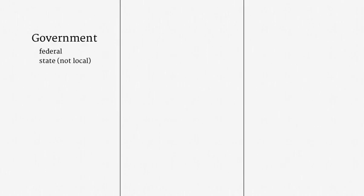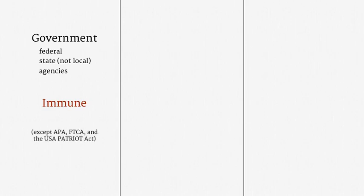The first category is the government. That includes the federal government, the state government — but not local governments — and all of the federal and state agencies. The entities in this category are immune from suit as sovereigns. A plaintiff can't get anything unless that immunity has been waived or abrogated. For our purposes, there are three exceptions to note. The United States has expressly waived sovereign immunity under the Administrative Procedure Act, the Federal Tort Claims Act, and the USA Patriot Act. Outside of those areas, a suit against the United States is no good.